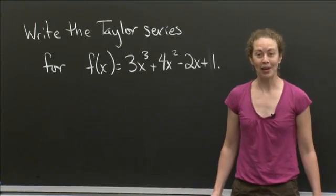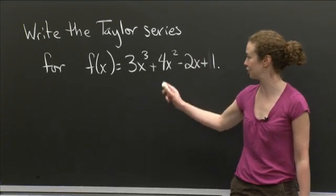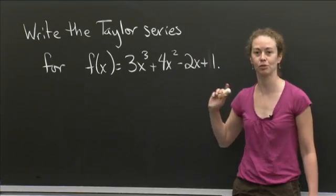All right, welcome back. Well, we want to find the Taylor series for this polynomial: f of x equals 3x cubed plus 4x squared minus 2x plus 1.